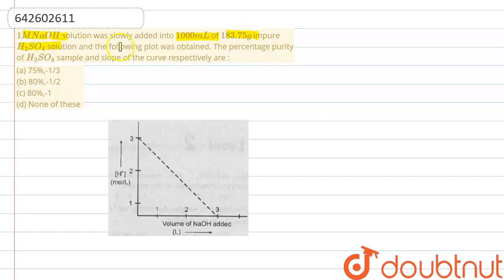And the following plot was obtained. The percentage purity of H2SO4 sample and the slope of the curve respectively are. So we have to find two things here: the first one is the percentage purity of the sulfuric acid sample and the slope.